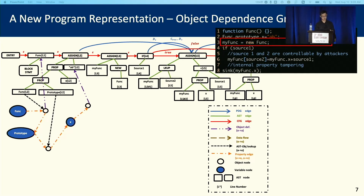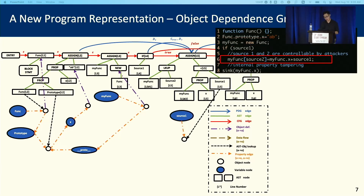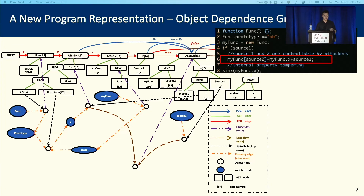At line 3, we have myfunc equals to a new func, so we will first create a new object node for this new operation and create a myfunc variable node and link them together. Besides that, since myfunc is an instance of func, we will link these two objects together by the prototype chain. At line 6, similarly, we will first handle the right part, find the object node for source 1 and the object node for myfunc.x, and since it's a plus operation, we will create a new object using these two objects and link this created object with the left part.